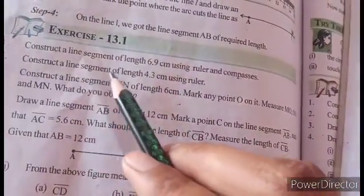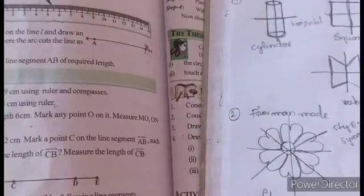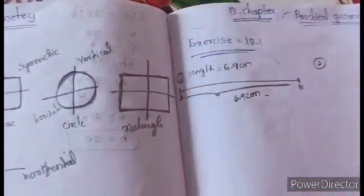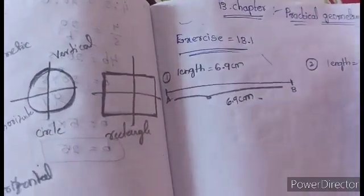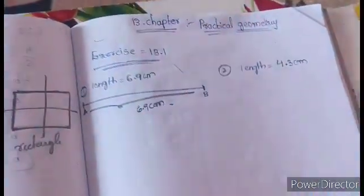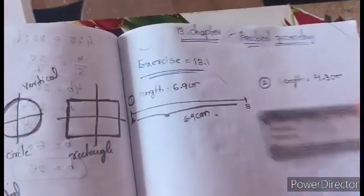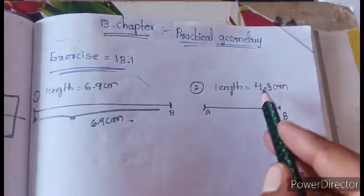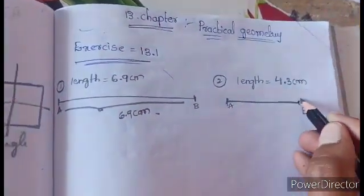Next question: construct a line segment of length 4.3 cm using ruler. I will show you 4.3 cm. The round is 4.3 cm. I use 4.3 cm — just give this size to 4.3 cm. The line segment length is 4.3 cm.